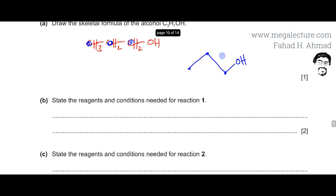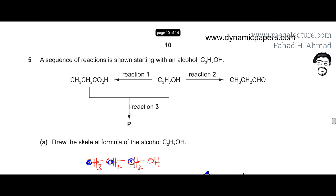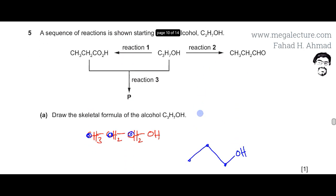Let's move to the next part of the question which states state the reagents and conditions needed for reaction 1. Let's go back and have a look. Reaction 1 is this one. It is alcohol changing into carboxylic acid which is oxidation and it's complete oxidation.